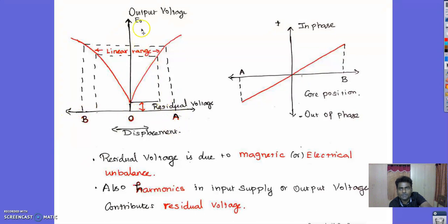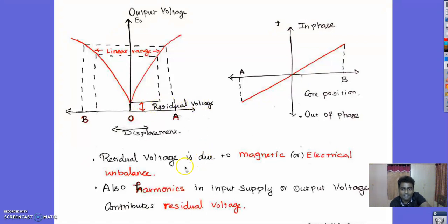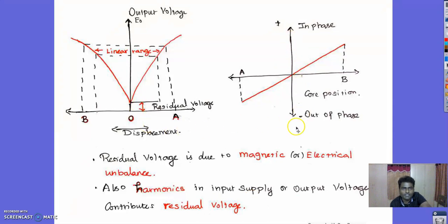The graph shows the relationship between output voltage and displacement. From the graph we can understand that there is a delay in the formation of output voltage — the output voltage stays at zero for some displacement range. This voltage is termed residual voltage. Residual voltage is due to magnetic or electrical unbalance in the circuit, and also because of harmonics in the input supply. The graph also shows the voltage values at in-phase and out-of-phase conditions.